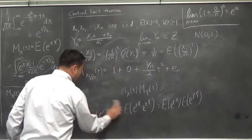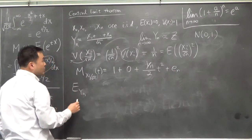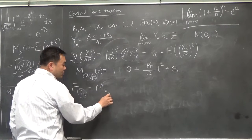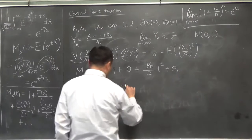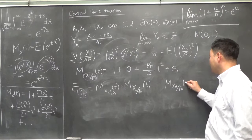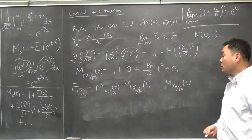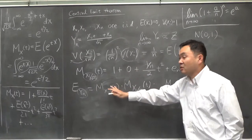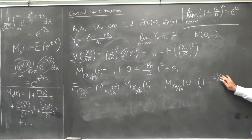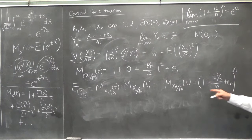And now what we're going to do is we're going to use that fact to calculate the moment-generating function of Yₙ. Because Yₙ is sum of a bunch of these things, and therefore, this is going to be M_{X₁/√n}(t) times M_{X₂/√n}(t) times ... M_{Xₙ/√n}(t). But all of them have the same moment-generating function, of course, because they're identically distributed. So this product is really the same thing to nth power. So therefore, we can say this is (1 + t²/(2n) + εₙ)^n. But now look, what is then the moment-generating function as n goes to infinity of Yₙ?